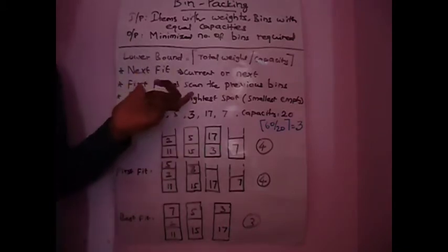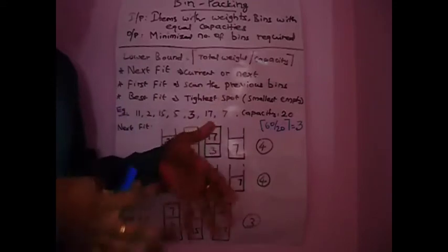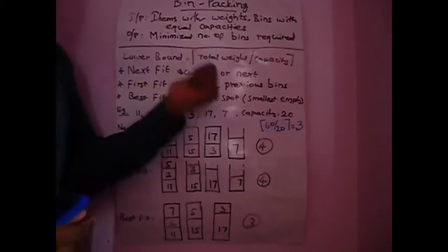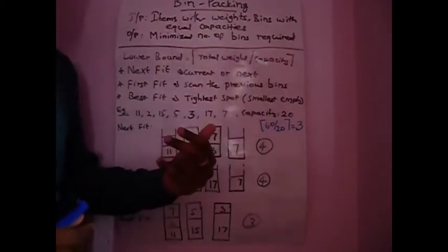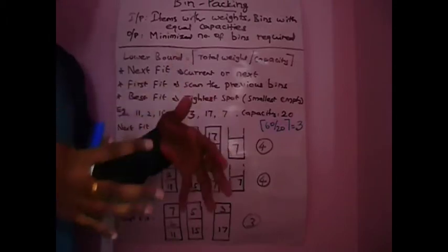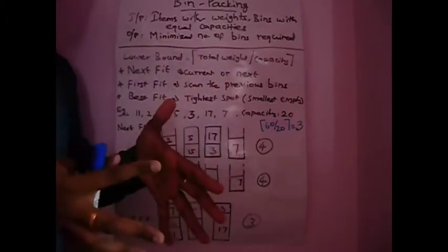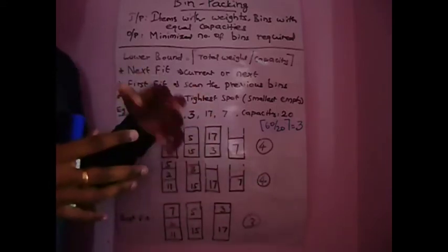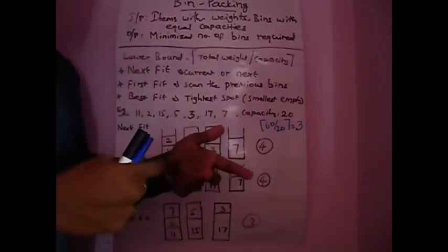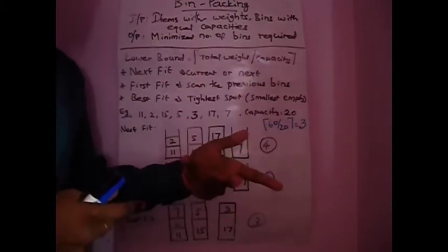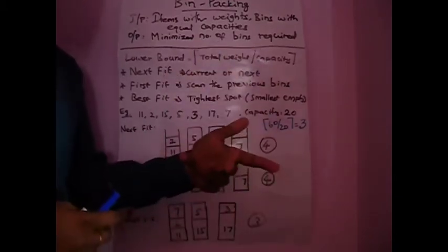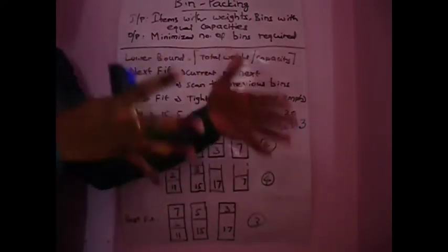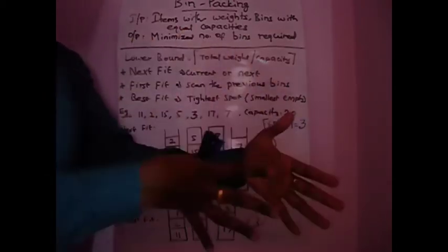Next Fit algorithm: we take the first item and try to accommodate it in the current bin. If the next item cannot fit in the current bin, we move to the next bin. When an item is placed in a new bin, we concentrate only on that bin going forward. If it cannot accommodate the next item either, we go to the next bin.